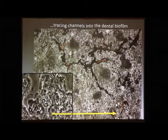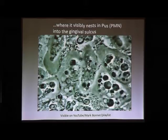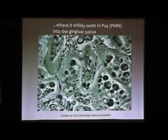We also see the amoeba moving — after five minutes we can see channels within the biofilm and the amoeba traveling from place to place at a certain speed within the gum disease. When the disease is active we see nests of those parasites — not just one but eight, ten, twenty or more — living within the pus among neutrophils at the bottom of your gum.